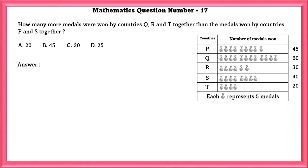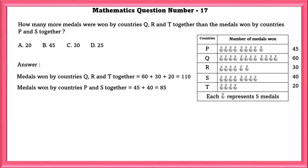How many more medals won by countries Q, R, and T together than the medals won by countries P and S together? Medals won by countries Q, R, and T together is 110. Medals won by countries P and S together is 85. 25 more medals were won by Q, R, T than P and S.